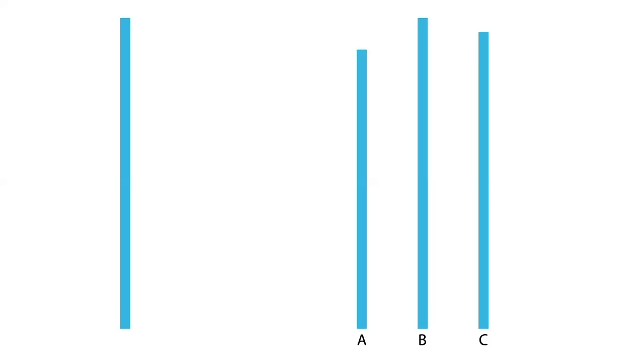I want to give you a test of your visual acuity, your sensitivity to differences in line lengths. I'm going to show you a standard, and then I'm going to show you three comparison lines. One is going to be bigger, one is going to be shorter, and one is going to be the same size as the standard. Your job is to tell me which line — A, B, or C — is the same as the standard. Seems like a simple judgment.